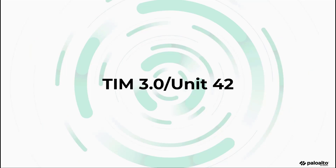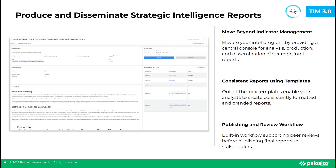Let's begin by talking about the threat intel management features. In 6.5, we've added functionality around threat intelligence reporting. This feature is really meant for customers who have threat intel teams that want to produce and distribute their own threat intelligence reports internally. The benefit of this feature is now analysts don't have to work outside XOR to create, publish, and distribute these reports. There's also an ability to control who can access these reports through RBAC controls.